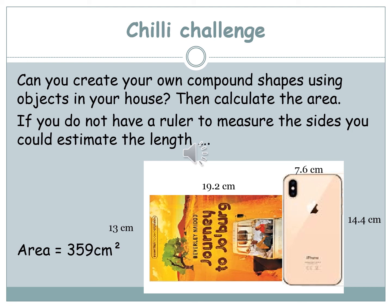The challenge for today is a little bit different. I want to see if you can create your own compound shapes using objects that you have in your house or your classroom. If you do not have a ruler at home, you could estimate the length and the width, or if you do have a ruler or a tape measure, then you could measure the size. Once you have measured the size, or estimated, you need to then calculate the area. Remember, if you have got a decimal, you need to round that to the nearest place. Look at the one that I found at home. I use the Journey to Jo Bed book and my mobile phone, and I found the area to be 359 centimeters squared. What shapes can you make? Take photos and put them into your book, or draw them into your book please.